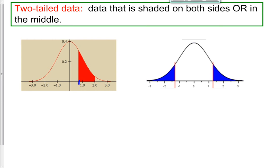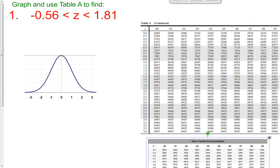This might be a z-score of 0.8 and this might be a z-score of 2.01 — just a little bit bigger than 2. We would want to find the percent of observations that lie between those two z-scores. Two-tailed data is also finding what percent lies below a z-score and what lies above another z-score — either in between two z-scores, or below and above a certain z-score. So here's our first example: we're trying to find what percent of our observations lie between a negative 0.56 and a 1.81.